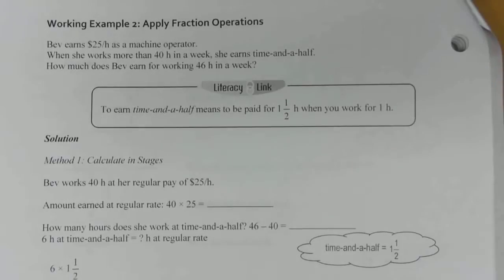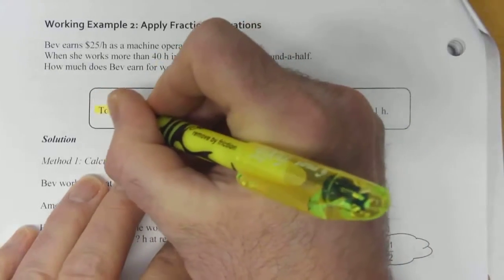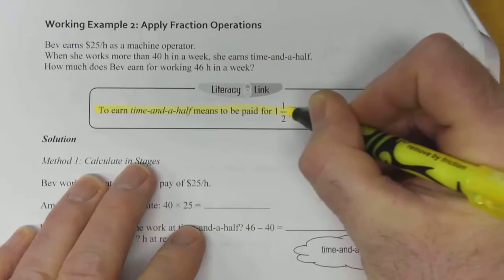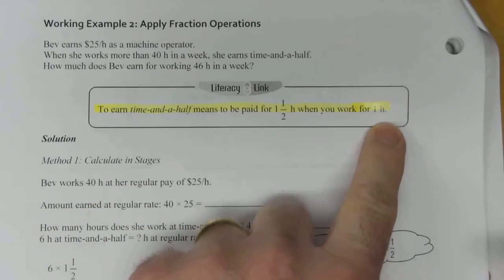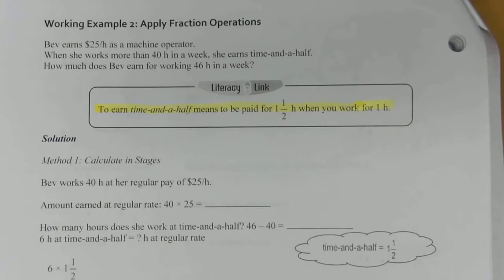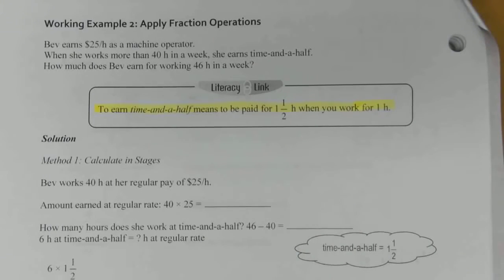So we've got this term here, time and a half. To earn time and a half means that you're paid for one and a half hours of work when you actually work for one hour. So you get a bonus half hour on your paycheck for every hour that you work that's at time and a half.